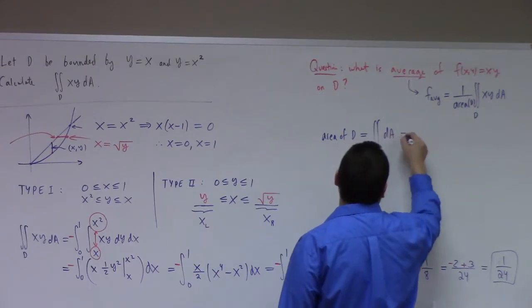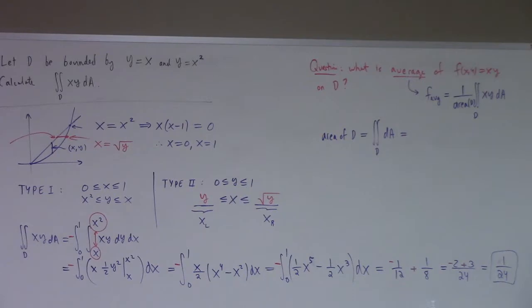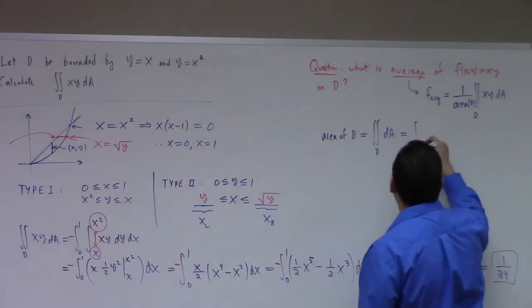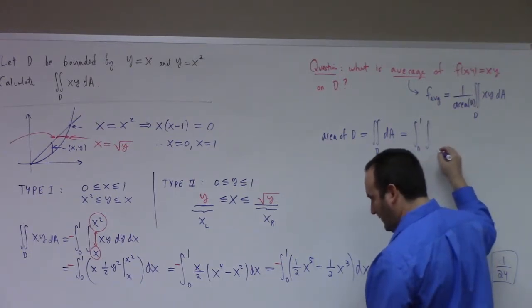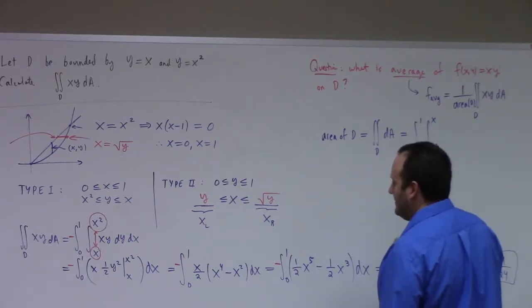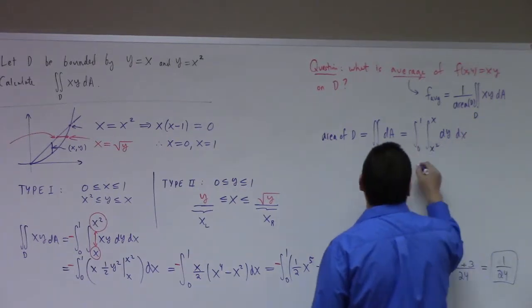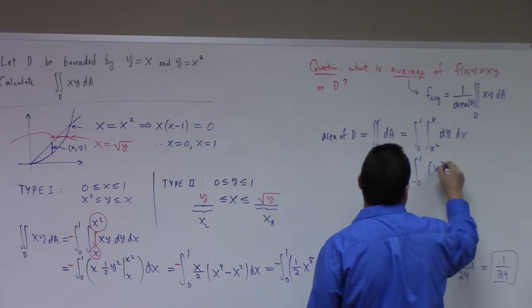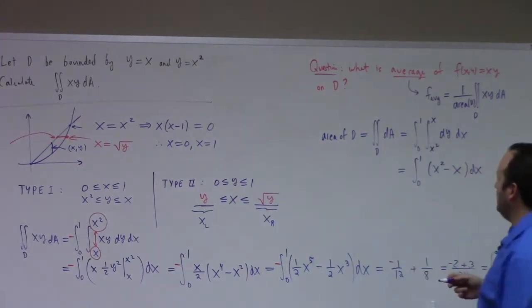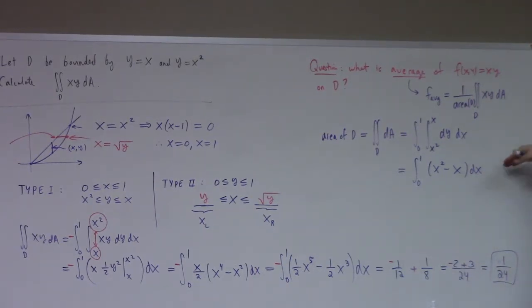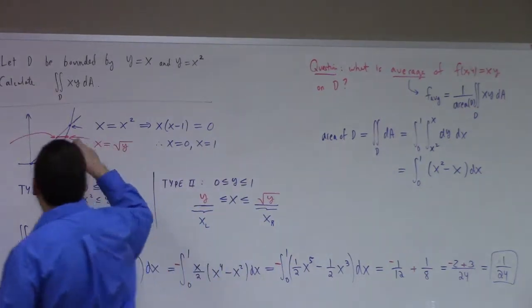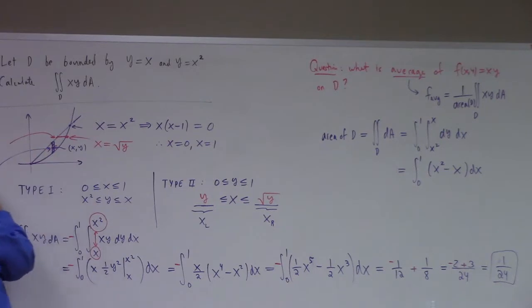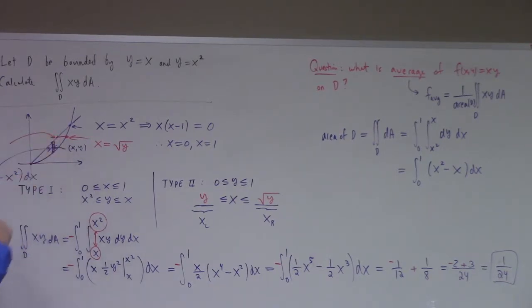So what's the area of d? Integral over d of dA. If we integrate dA over d, that gives us the area. That's the integral from 0 to 1, integral from x squared to x, dy dx. You should recognize this as something you did before — when we calculated areas between curves. The typical approximating rectangle has height x minus x squared and width dx. That's the infinitesimal area.